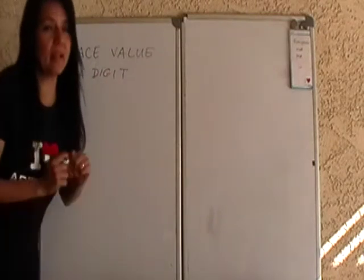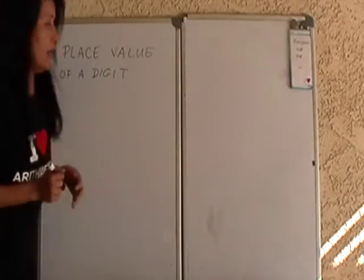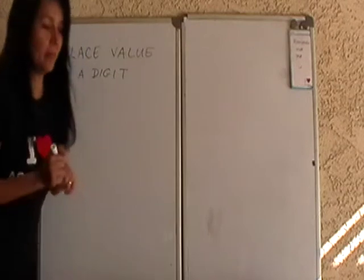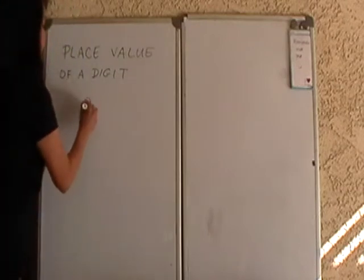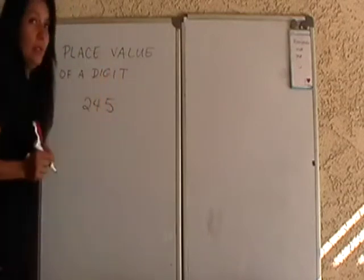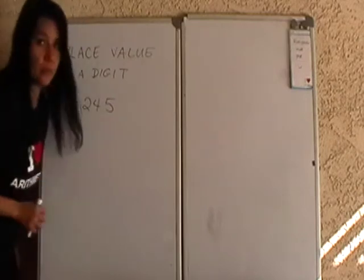First, let me explain what it means when I ask you for the place value of a digit of a whole number. So supposing I have the whole number, and you know how to read this, hopefully, 245.